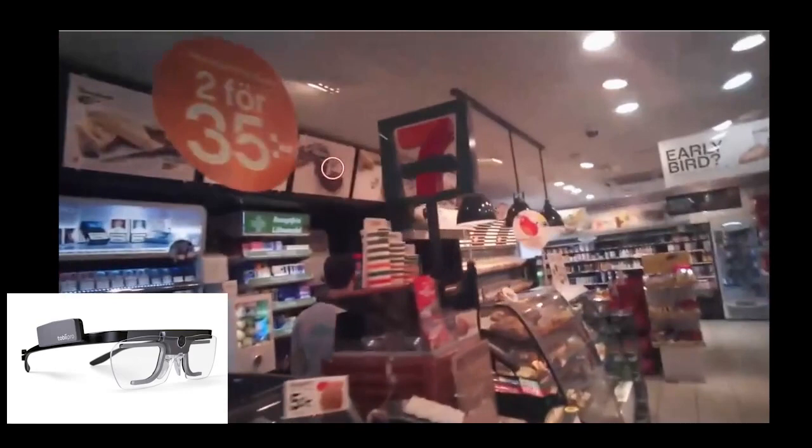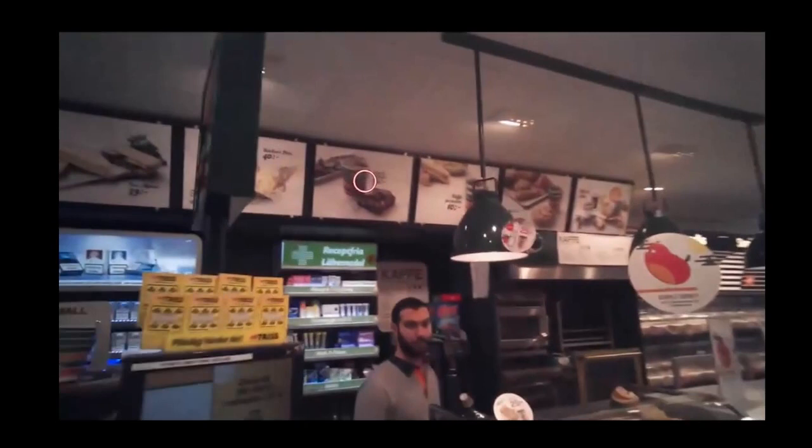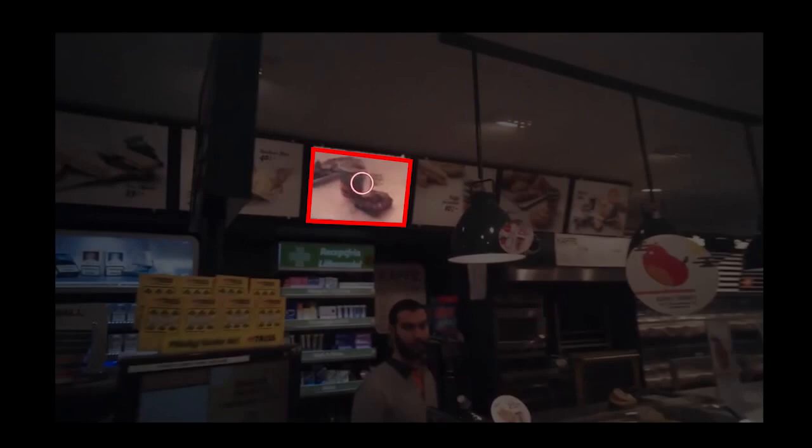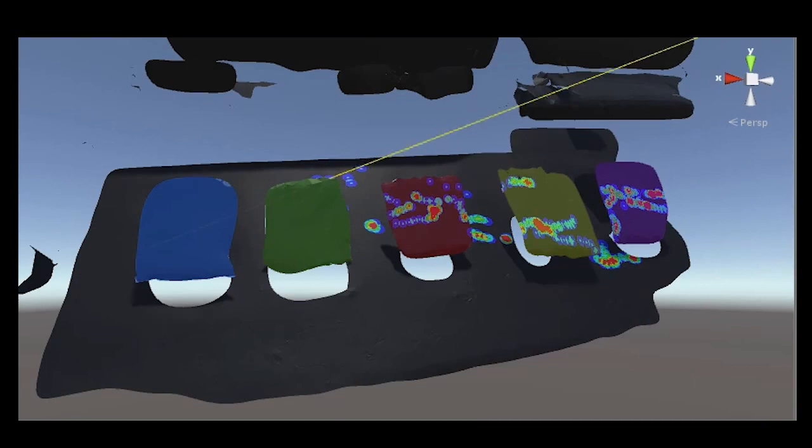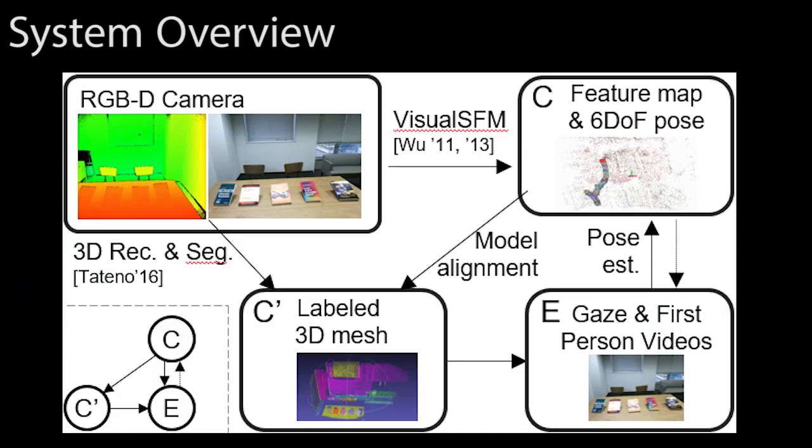Recent eye-tracking techniques allow us to continuously record human gaze positions on 2D videos. To further understand gazing behaviors, we believe object-wise gaze mapping can be a crucial technique. This motivated us to investigate how to map 2D gaze positions into 3D objects.